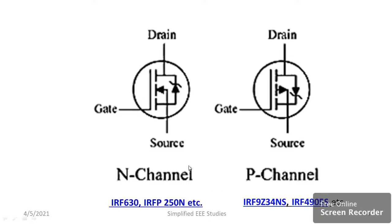Some practical examples of n-channel MOSFETs: IRF-630 and IRFP250N are popular n-channel MOSFETs — you can get more information from their datasheets. Regarding p-channel MOSFETs, IRF9Z34NS and IRF4905S are popular examples of p-channel MOSFETs.